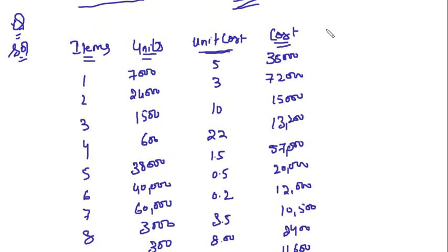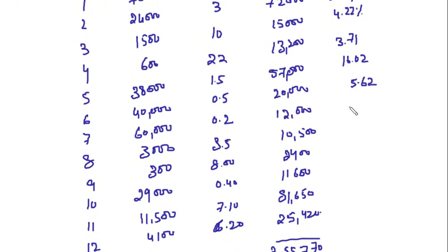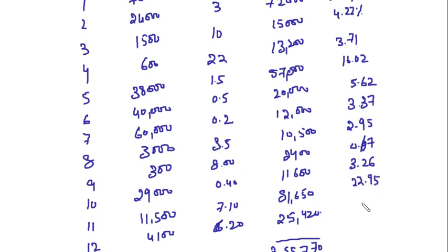Now we will calculate what percentage of total cost each item represents. The percentages come to: 9.84%, 20.24%, 4.22%, 3.71%, 16.02%, 5.62%, 3.37%, 2.95%, 0.67%, 3.26%, 22.95%, and 7.15% — totalling 100%.